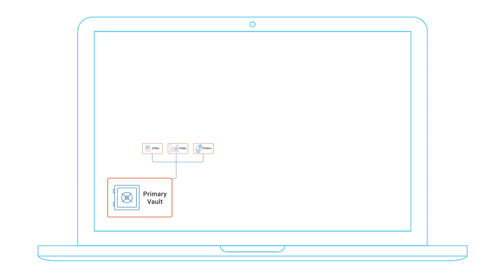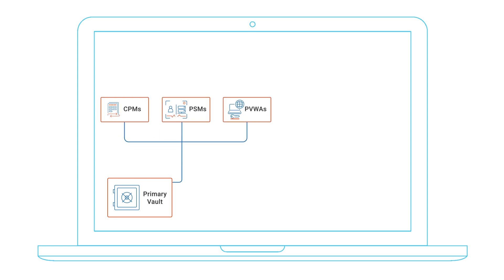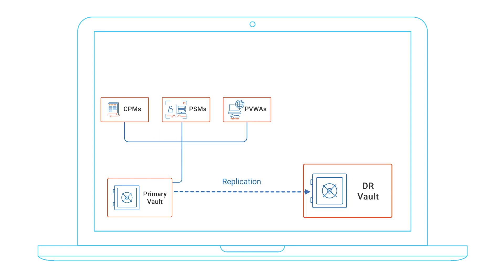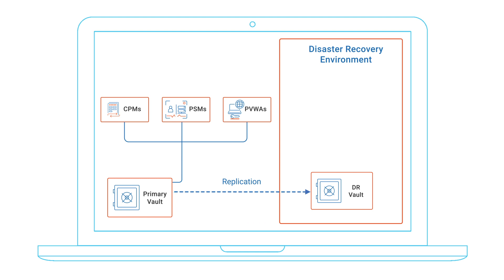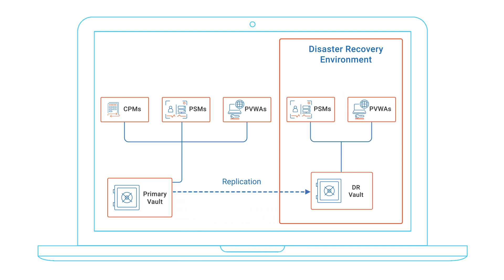The components can be deployed as active nodes in the primary site with a cold standby node in the DR site. Cold standby nodes allow you to manually turn on these backup components in the event the primary site goes down. However, many organizations often take the approach of having active-active load balanced components, meaning that the PVWAs and PSMs in both the primary and DR site are all active and configured to communicate with the primary vault.